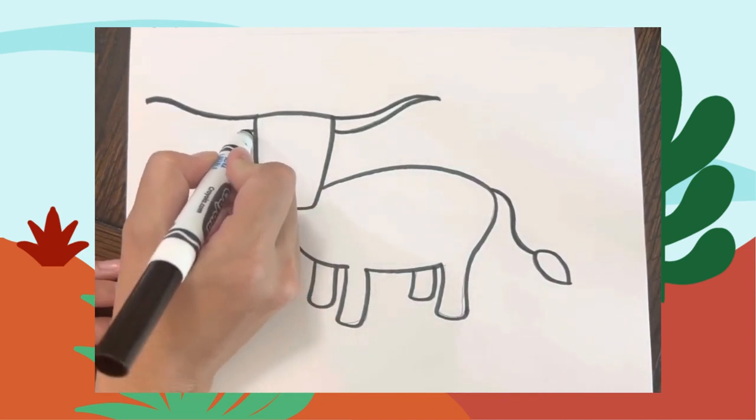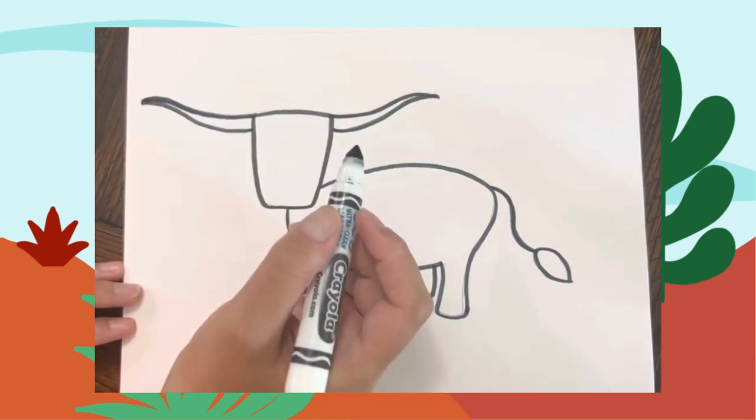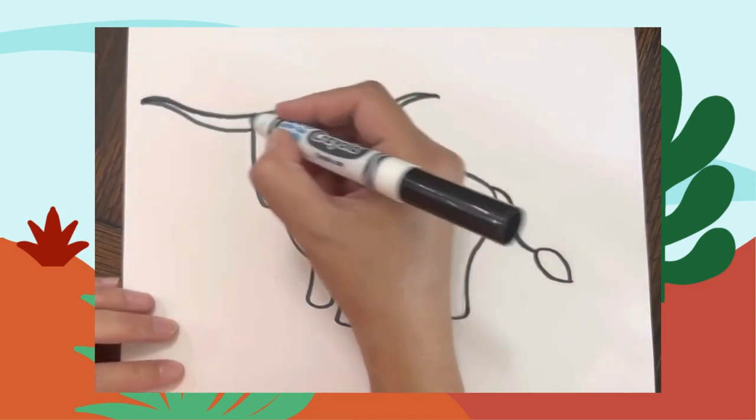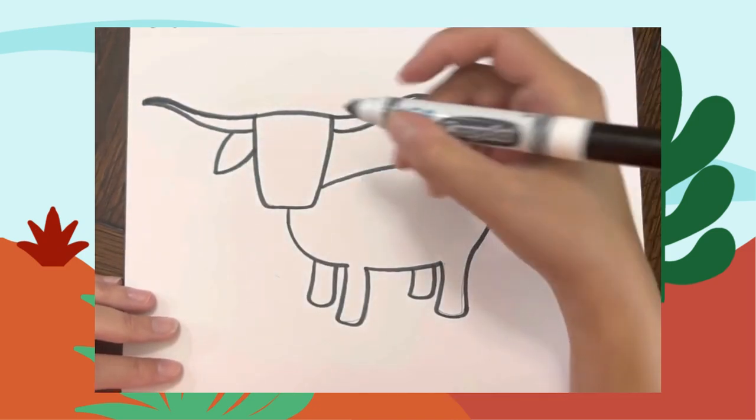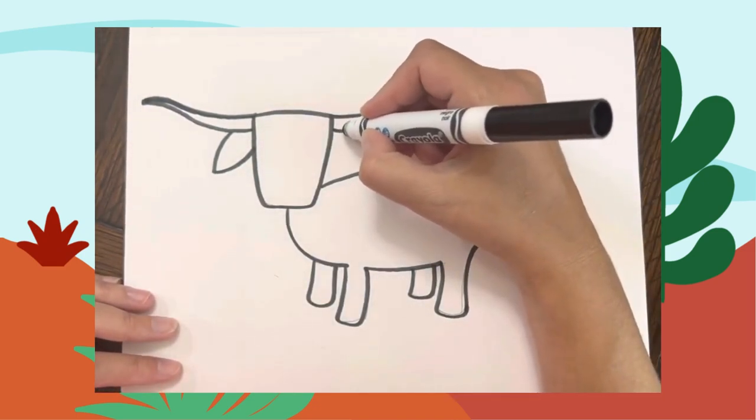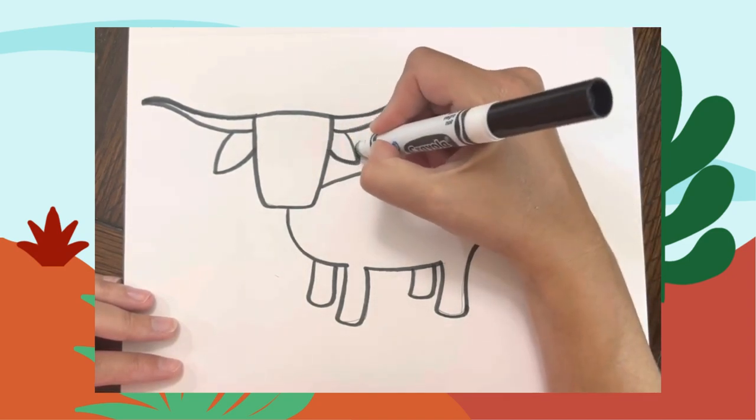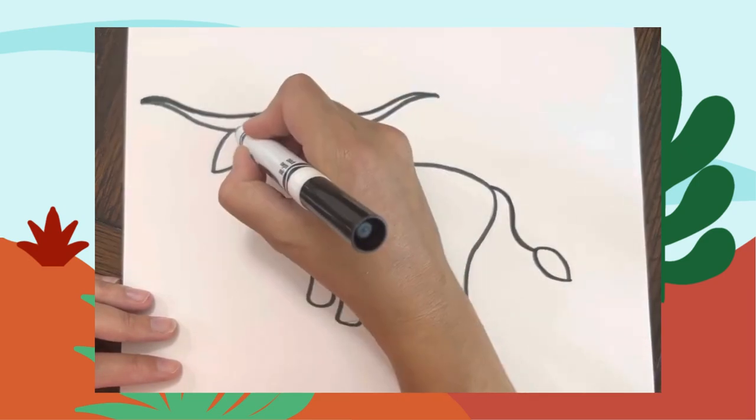All right, he needs some ears. Let's make some ears under his horns. I'm going to make a curved line coming down to a point and then back up to the other side. Same thing. I made that ear a little too small—I'm going to make it just a little bigger. And then we'll trace the insides.